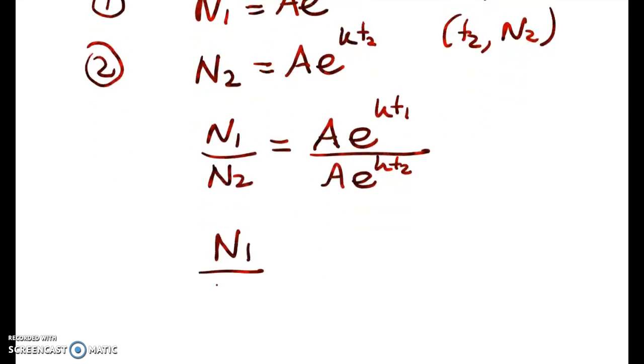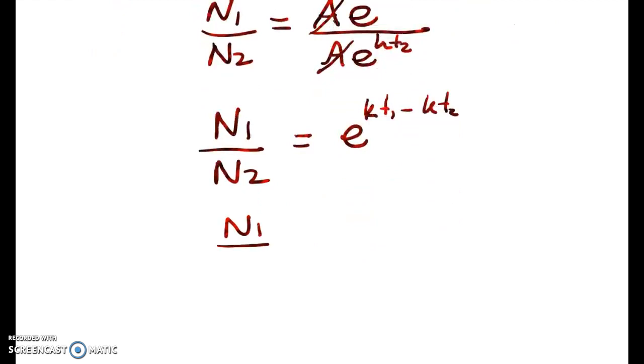Simplifying here, we get n1 over n2 is equal to e. So the a's have gone. Now I've got the same base, so I can subtract the powers, giving me n1 over n2 is e to the k times t1 minus t2.